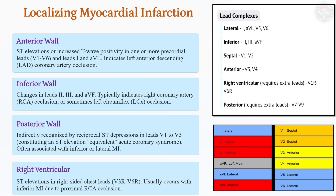ECG changes provide insight into the anatomical location of myocardial infarction, correlating with specific coronary artery involvement. Anterior MI, marked by leads V1 to V6, lead I, and AVL, suggests left anterior descending artery (LAD) occlusion, often associated with large infarct size and significant complications.